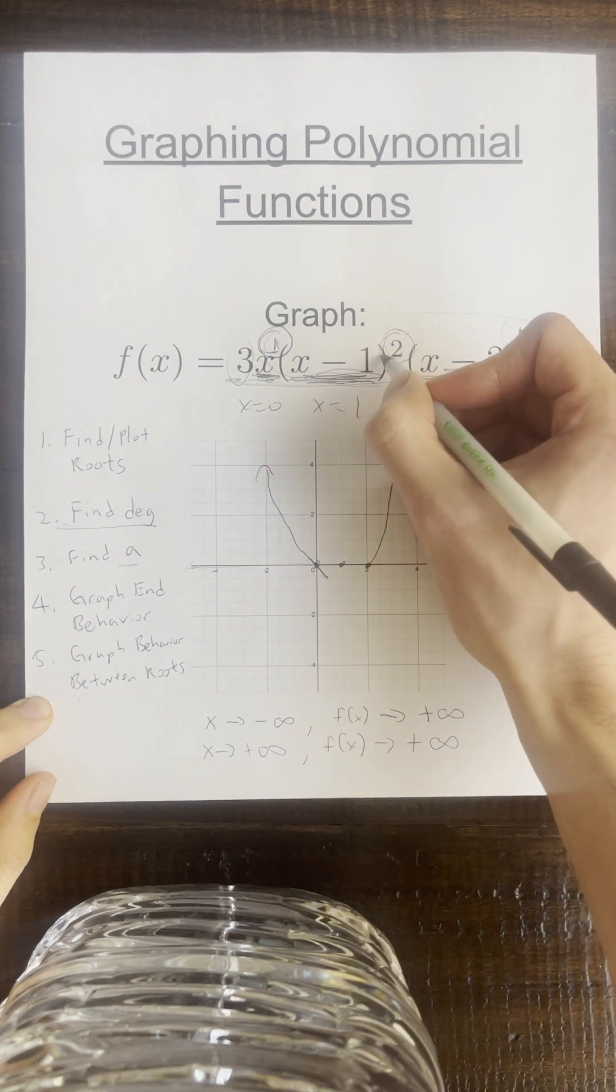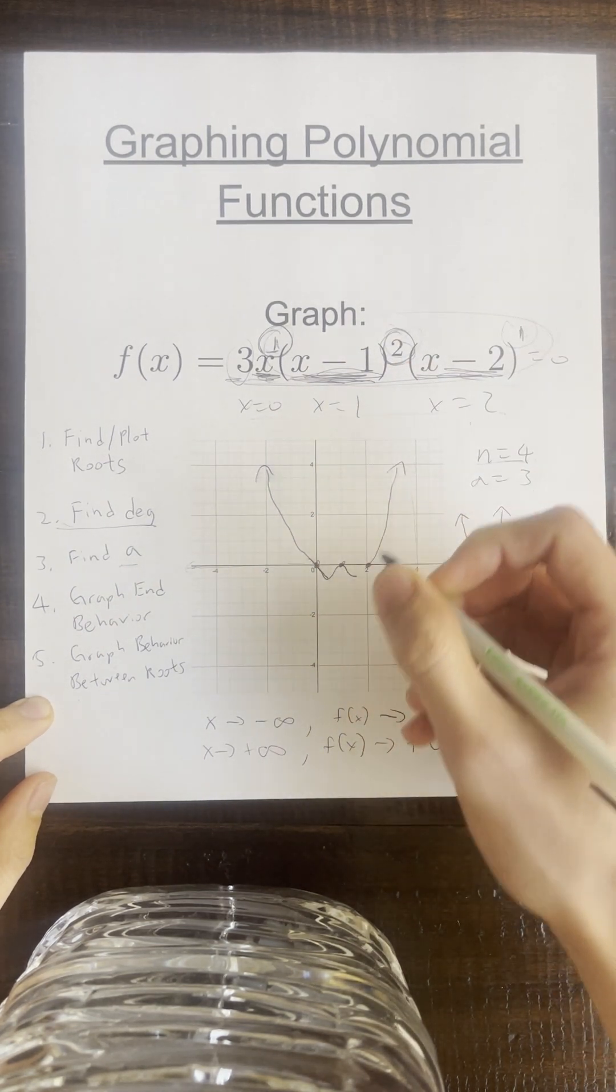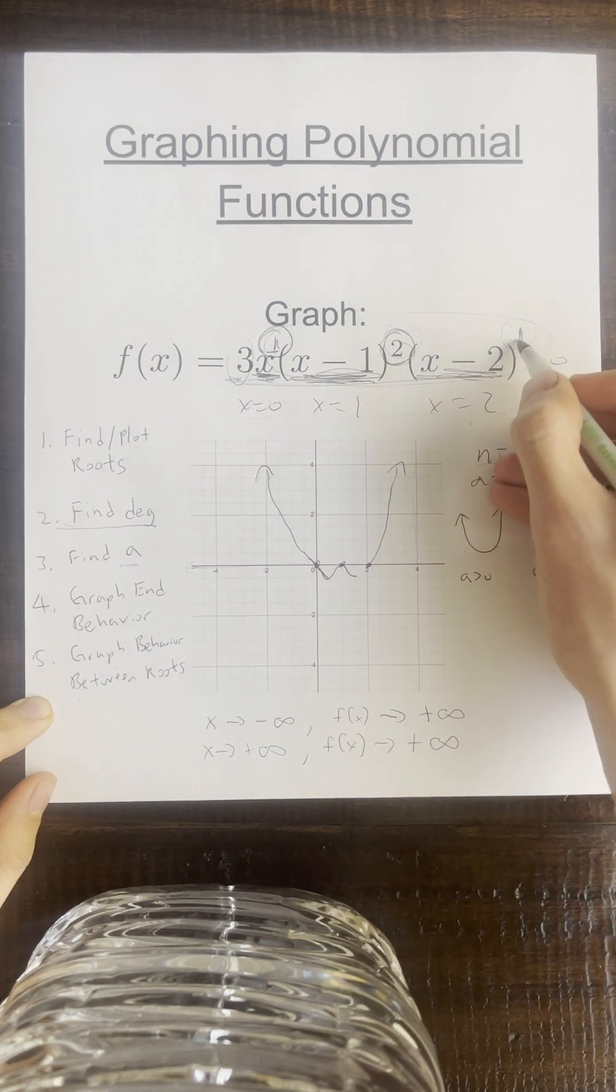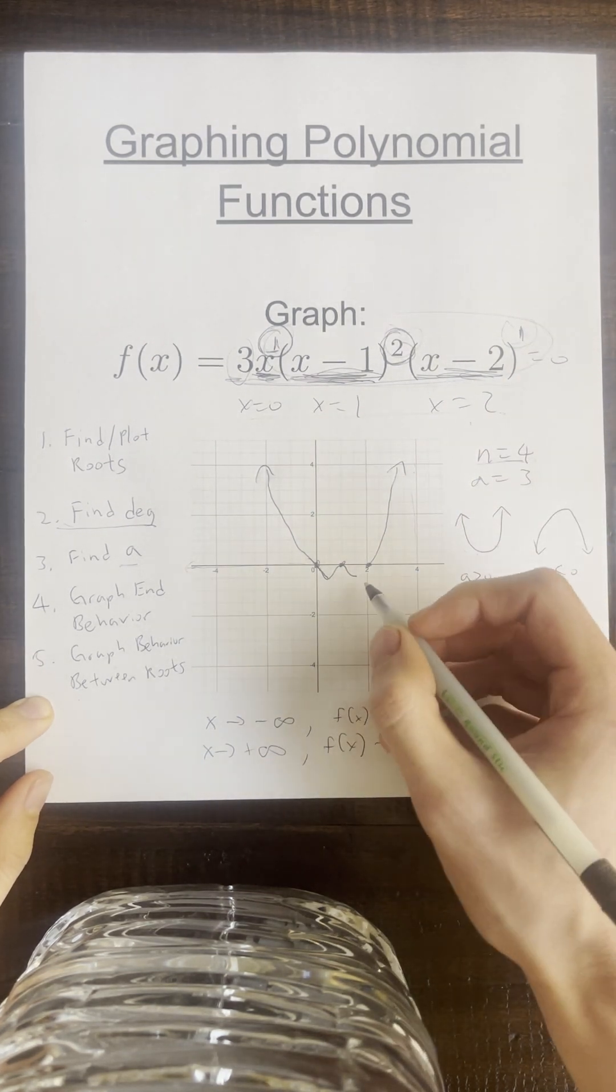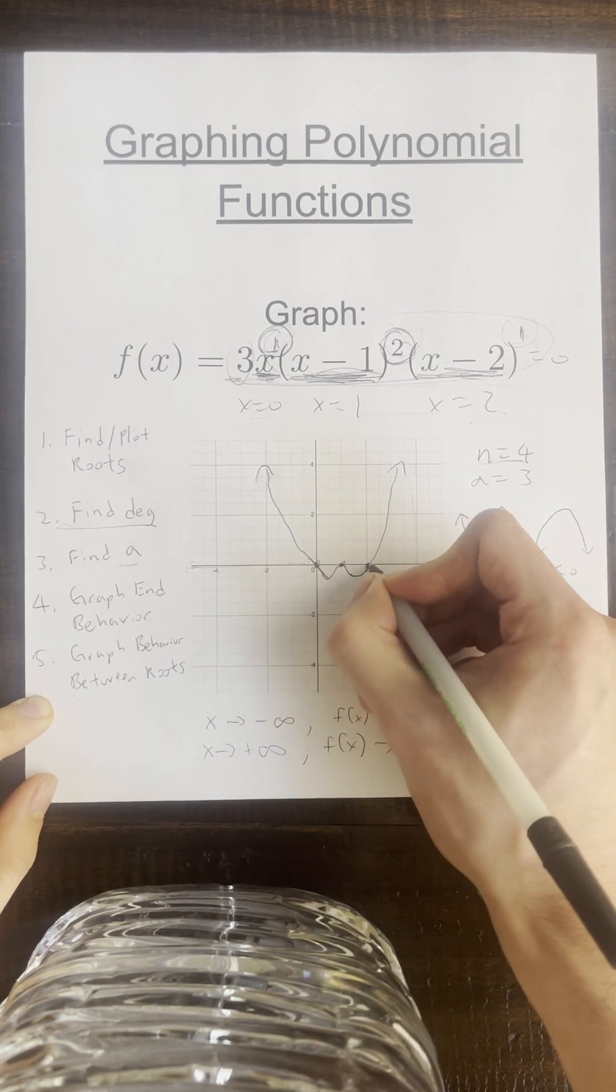And then if we have an even multiplicity, we have to bounce off the root. So it's going to look like this. And then we have another odd multiplicity. So are we going to bounce off? Or are we going to pass through the root? We're going to pass through the root.